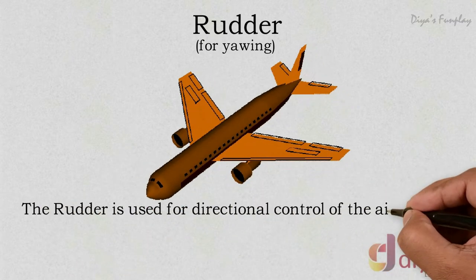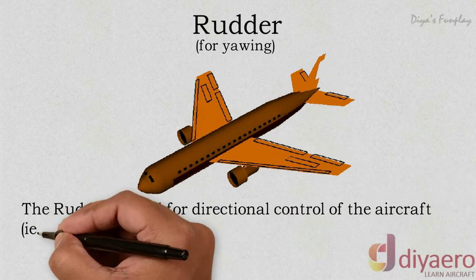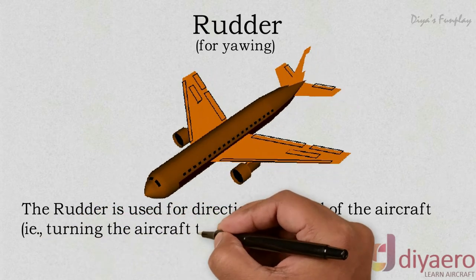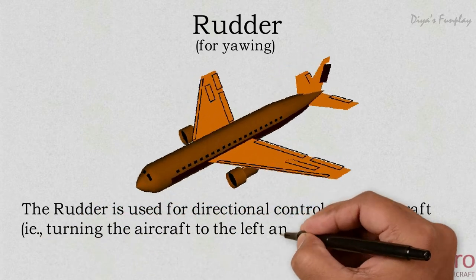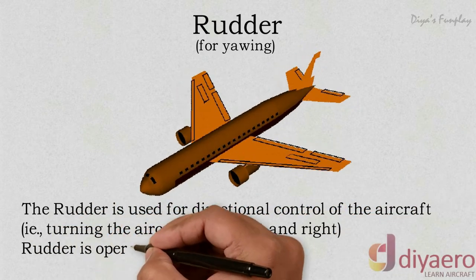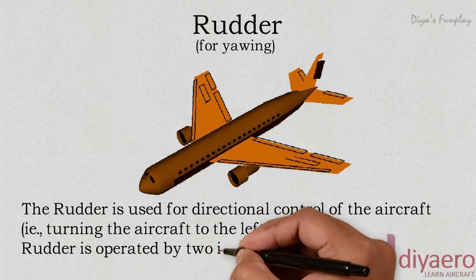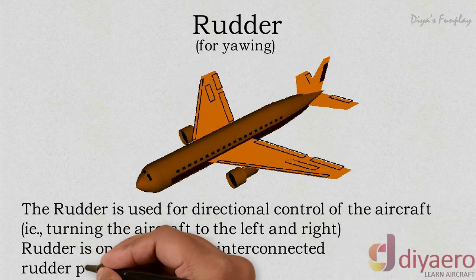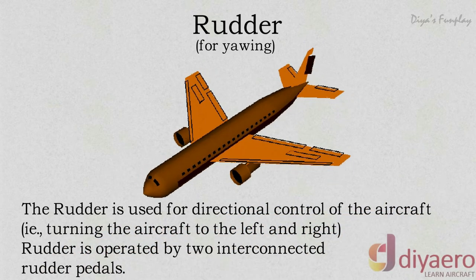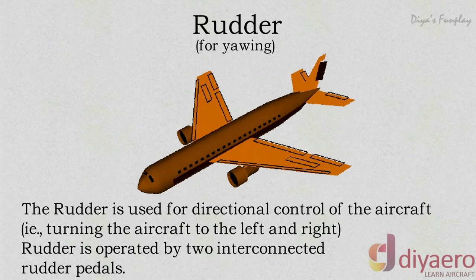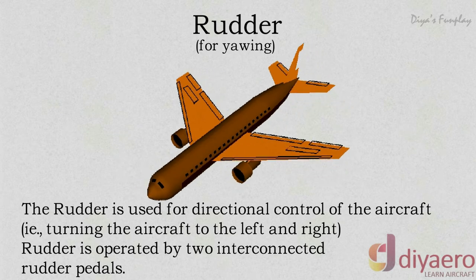By pushing the left pedal, the rudder moves towards the left direction. This alters the fin and the rudder aerofoil section, and a sideways lift is created that sends the tail to the right and yaws the aircraft nose to the left with respect to the normal axis.